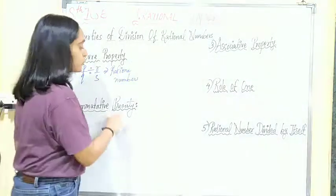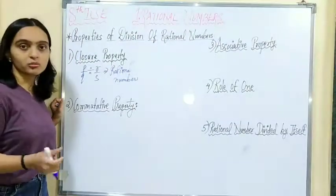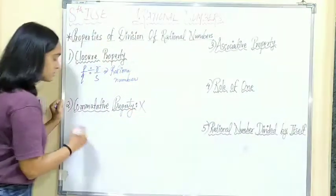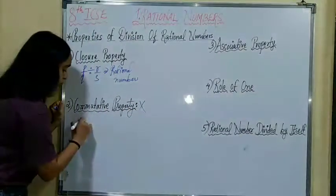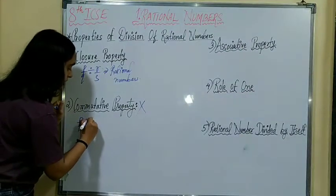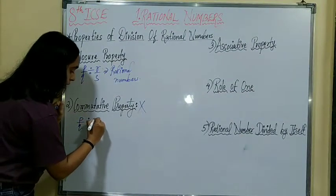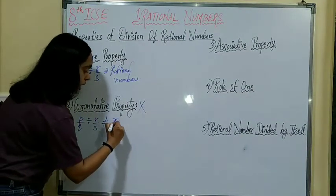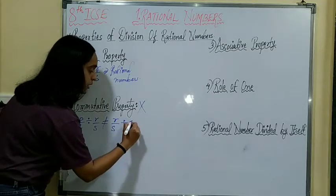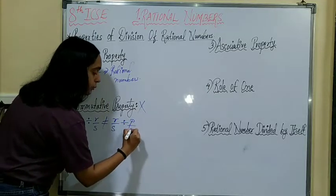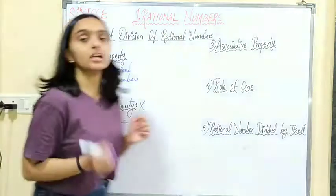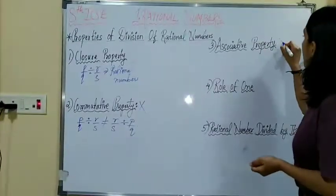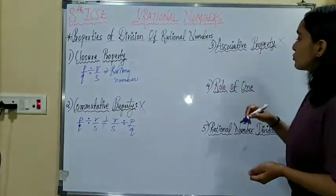Commutative property: division of rational numbers does not satisfy commutative property. That is, P upon Q divided by R upon S is not equal to R upon S divided by P upon Q. Similarly, division of rational numbers does not follow associative property. That is, if you have three rational numbers P upon Q, R upon S, and U upon B, then P upon Q divided by (R upon S divided by U upon B) is not equal to (P upon Q divided by R upon S) divided by U upon B.